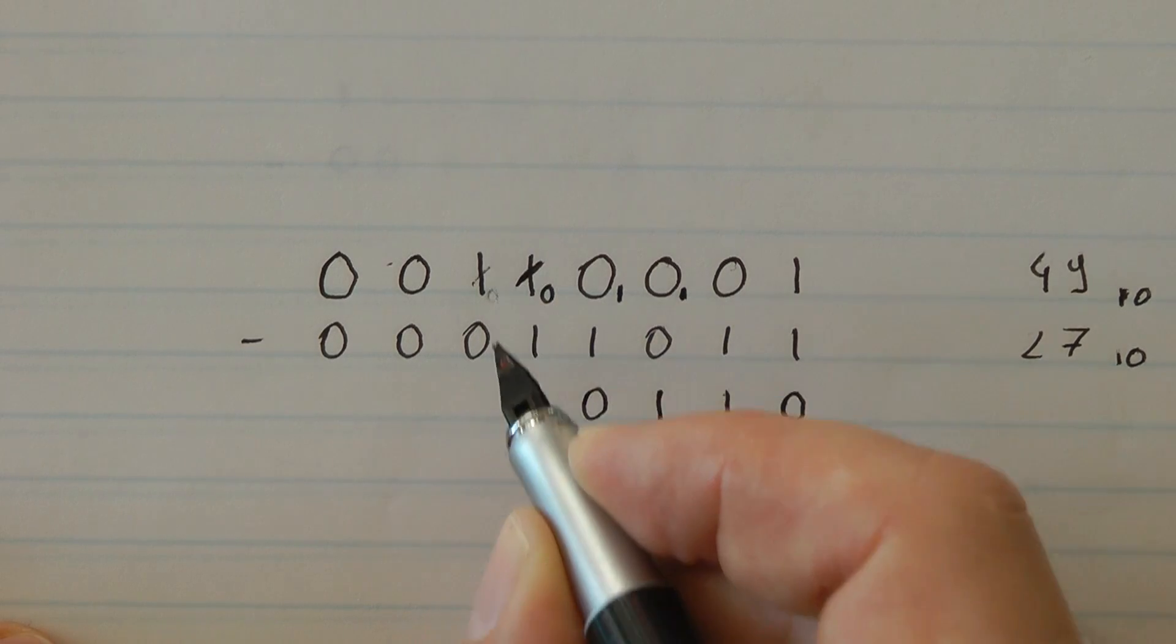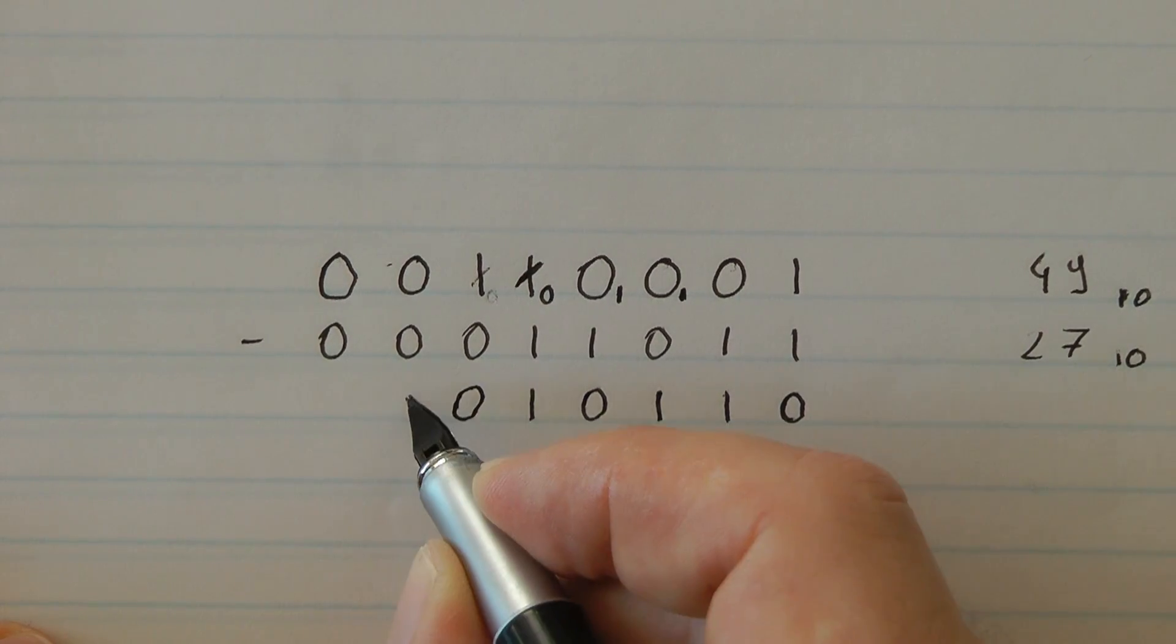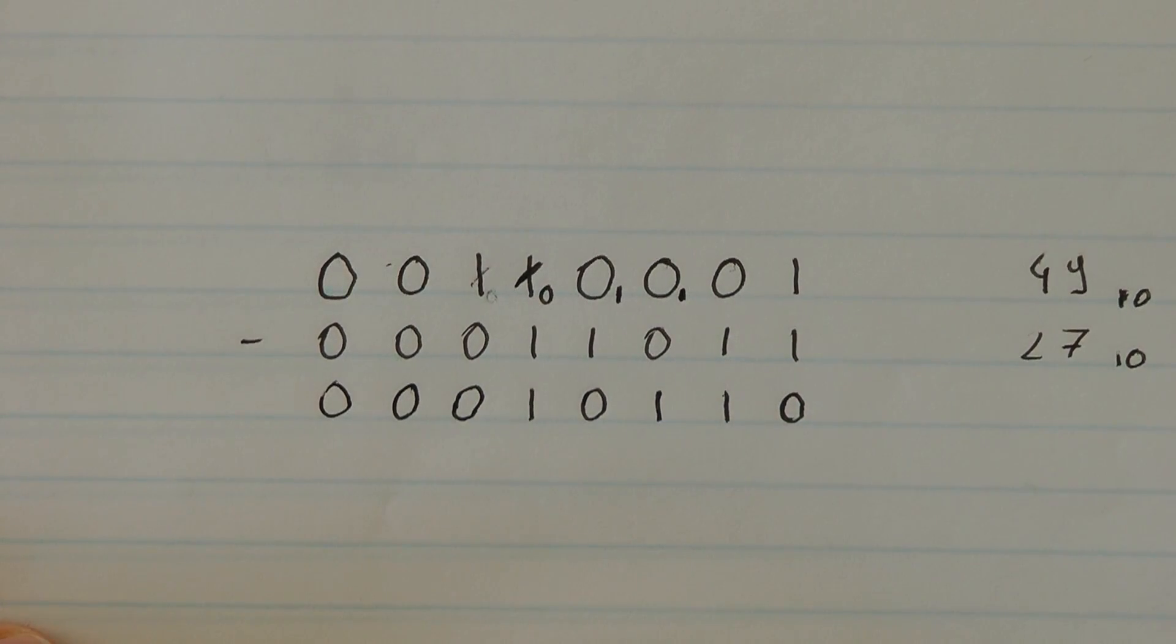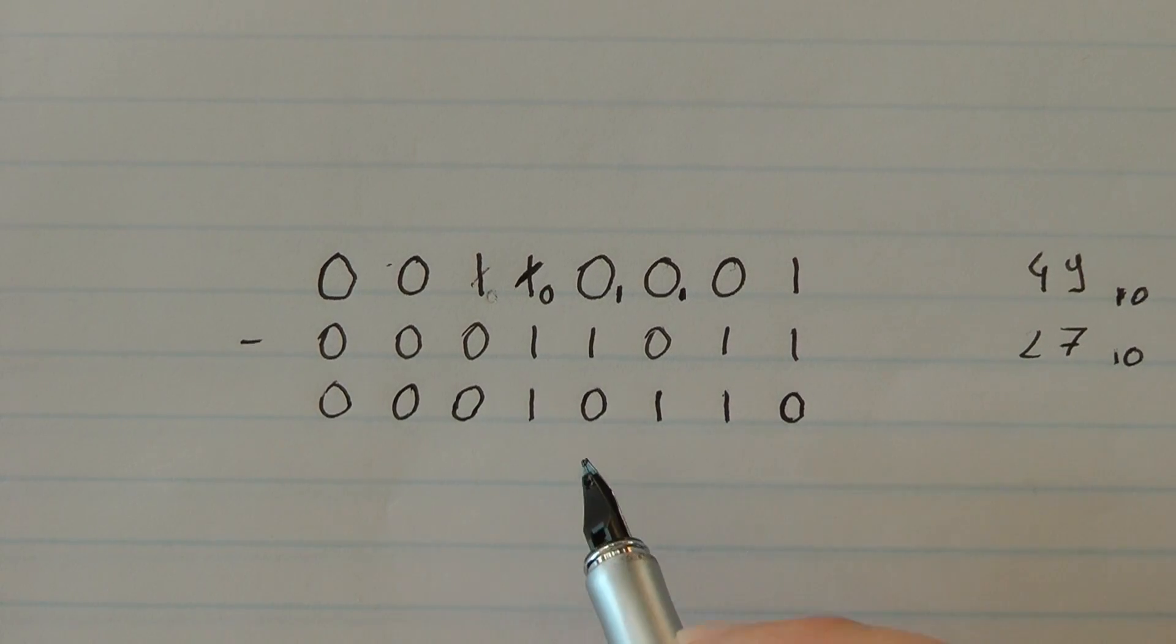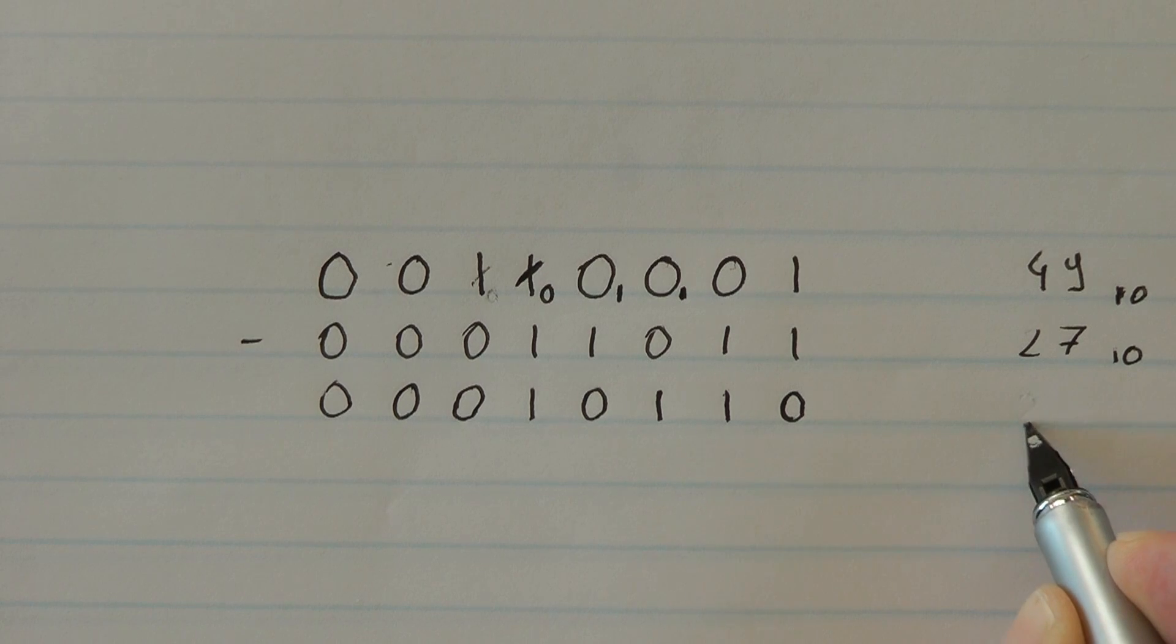And then I've got 0, 0, 0. Perfect. So 49 minus 27 and here we've got 16 and 4, 20 and 2, 22 which is the correct result.